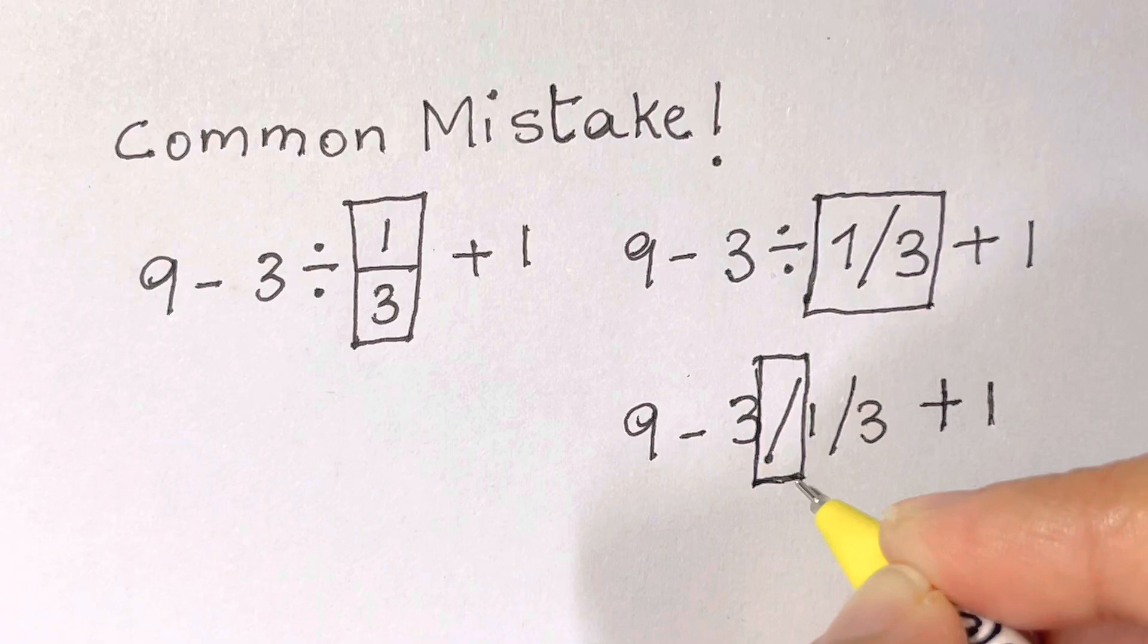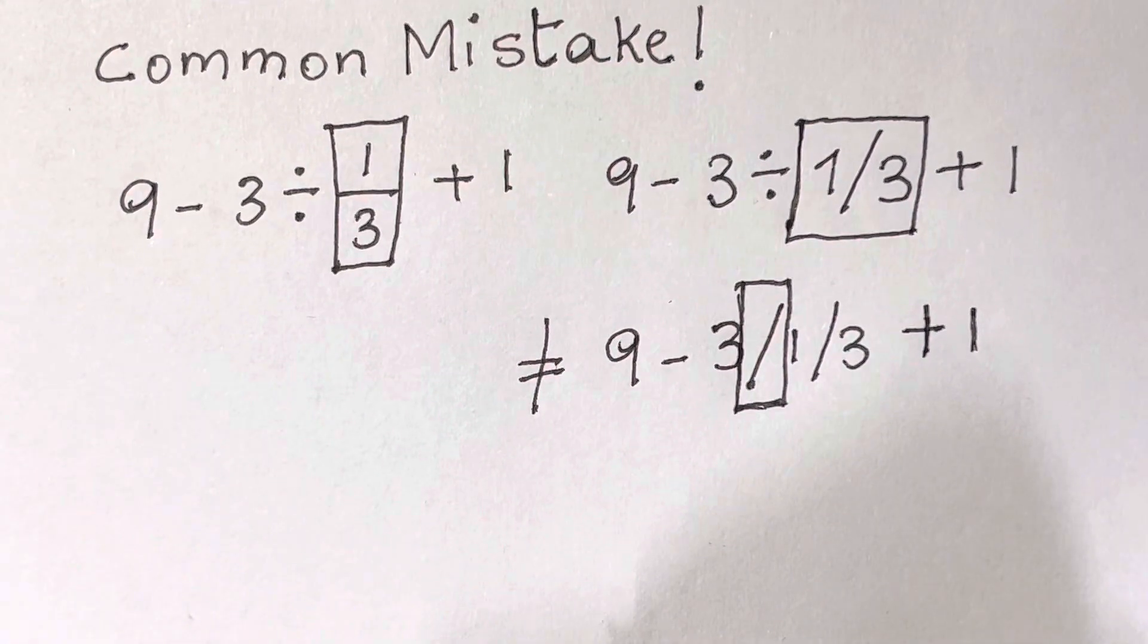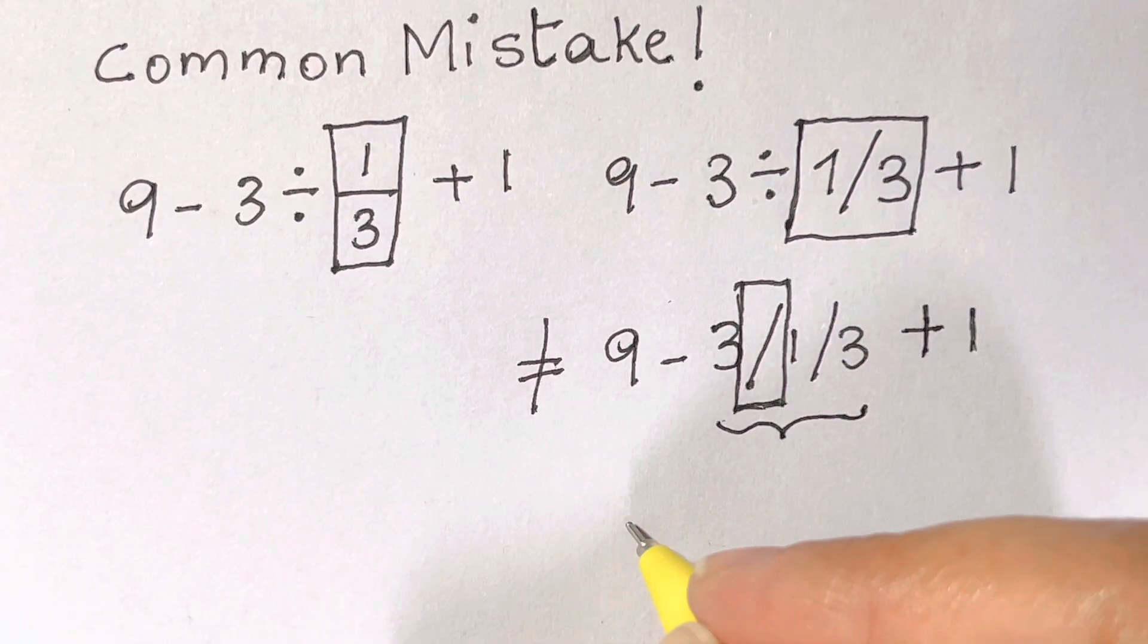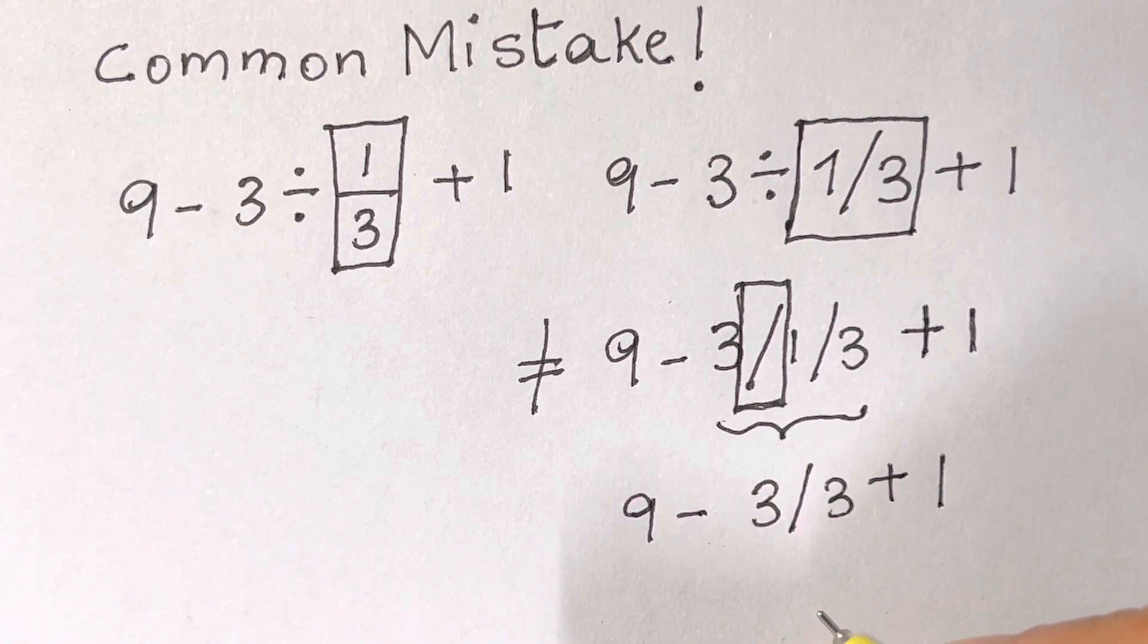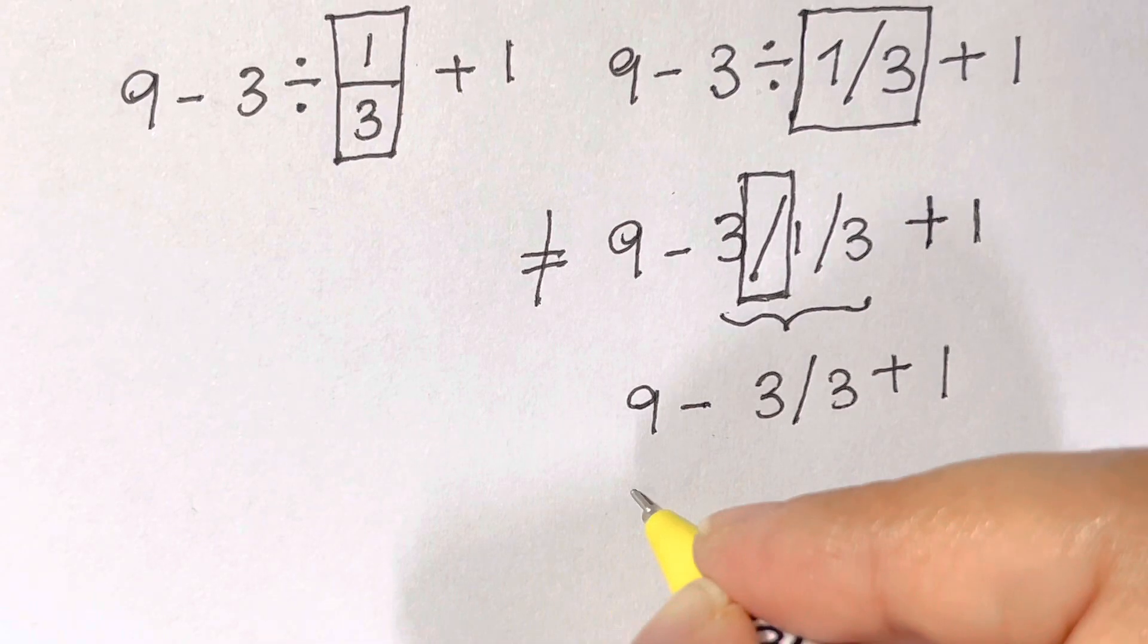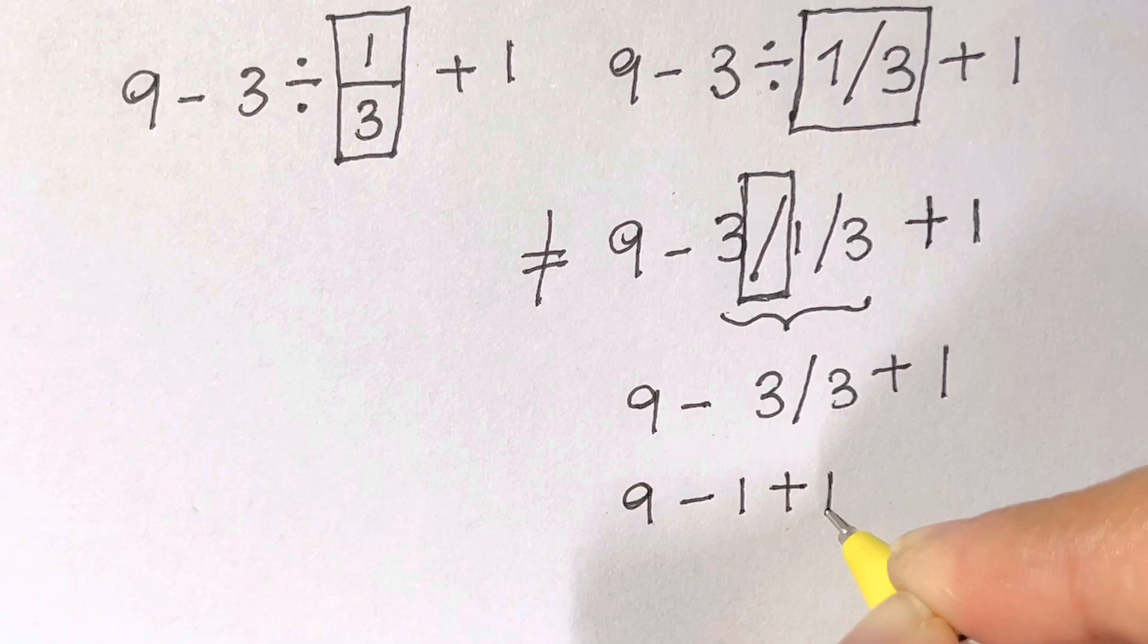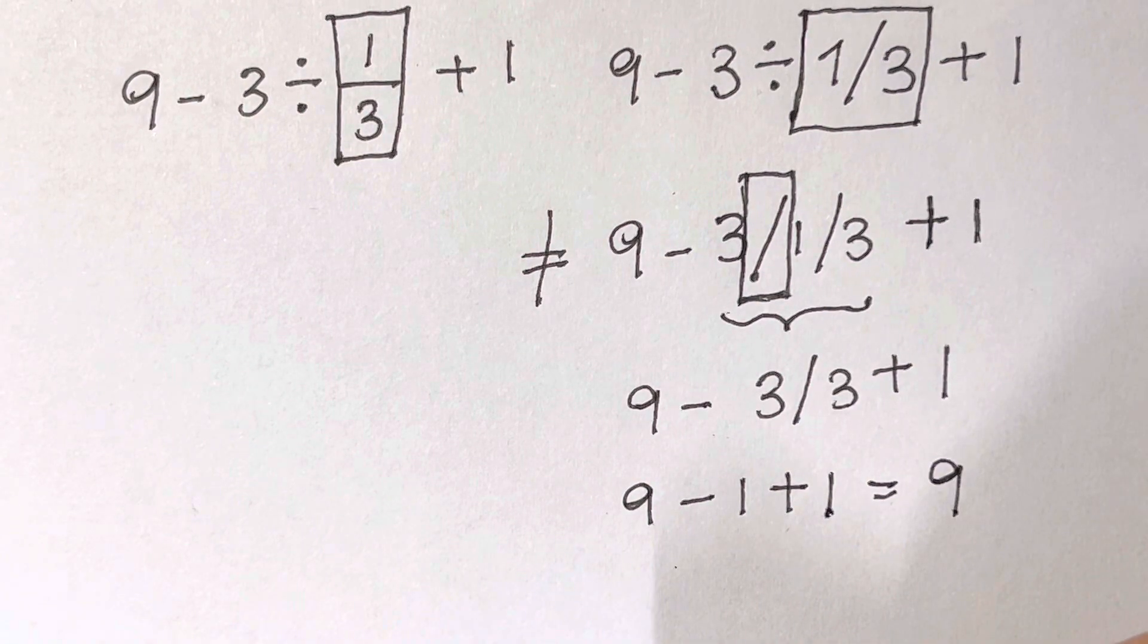This will not be equal to a rational expression. The calculator is going to look at 3 ÷ 1 ÷ 3 as one term and evaluate from left to right. It's going to evaluate 3 ÷ 1 first, then 3 ÷ 3, and then 9 - 1 + 1, which will give you the result of 9.